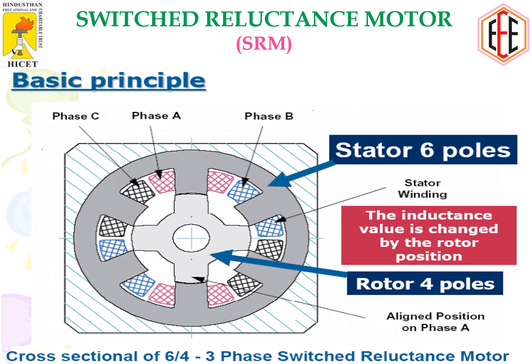This is the simplified diagram of the 6×4 SRM with phase A, phase B, and phase C — three sets of coils which are independent of each other. Phase A coil is not connected to phase B, and phase B is not connected to phase C. The inductance is determined by the rotor position, and variation of inductance is very important to the working principle of the SRM.